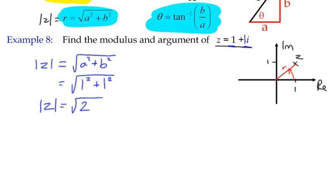The argument is slightly different. If we can say that theta is the inverse tan of B over A, which in this case is 1 over 1, it is the inverse tan of 1. The tan of what angle is 1, positive 1?